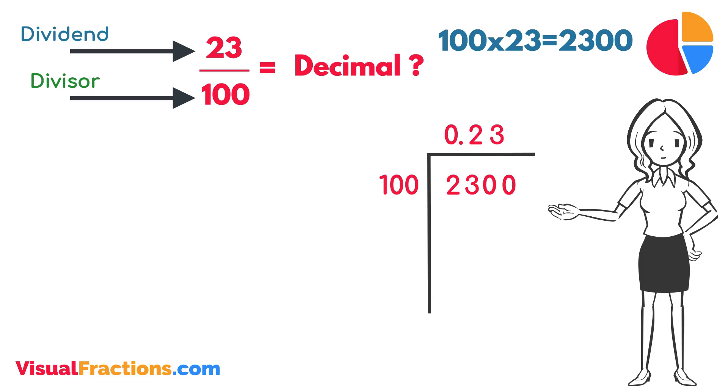Multiplying 23 by 100 gives us 2,300. When we subtract 2,300 from 2,300, we get a remainder of 0.